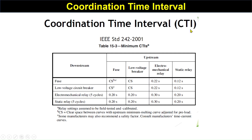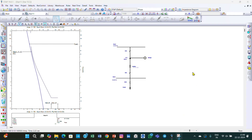This is the coordination time interval as per IEEE Standard 242-2001. The downstream devices are listed here and the upstream devices are listed on the other side. Our downstream device is a fuse and our upstream device is a static relay or numerical relay, so the coordination time should be 0.12 seconds or less. We have to set this coordination time interval between the relay and the fuse.